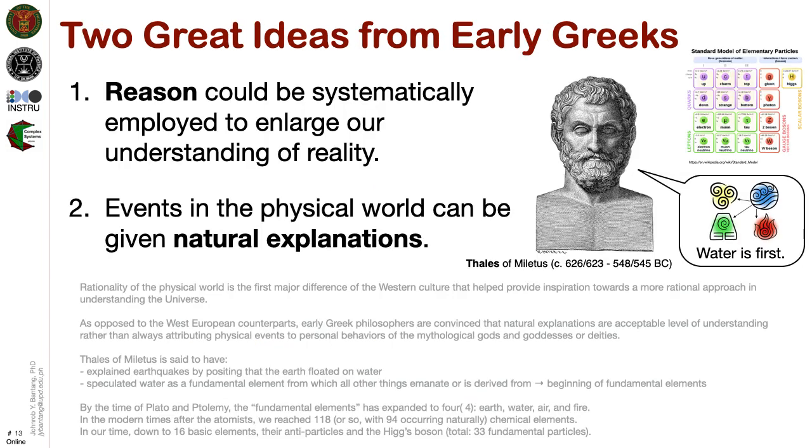The early Greek philosophers already knew that there is order in the universe and that this order can be understood via our reason. By reason, we mean how humans can understand the universe. There are two great ideas from the early Greeks: that reason could be systematically employed to enlarge our understanding of reality, and that events in the physical world can be given natural explanations. Thales of Miletus is said to have explained earthquakes by positing that the earth floated on water.